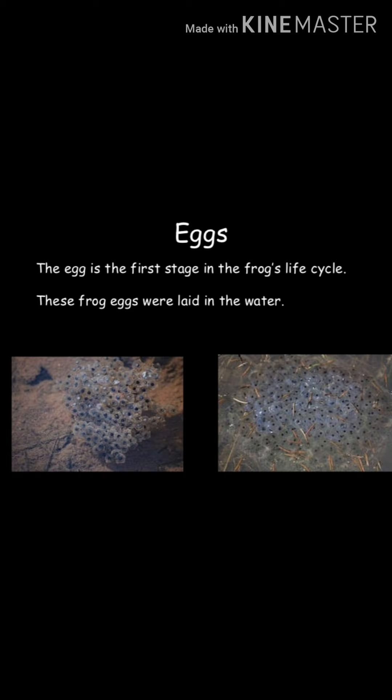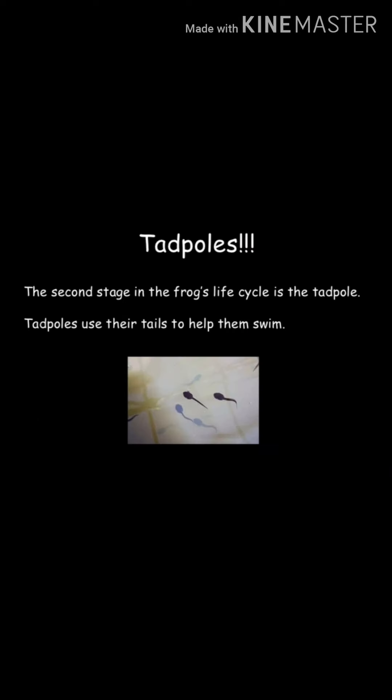Number one is eggs. The egg is the first stage in the frog's life cycle. Female frogs lay eggs in the water. Eggs are laid in masses — approximately 4,000 eggs are laid at one time. The eggs hatch in one to three weeks.